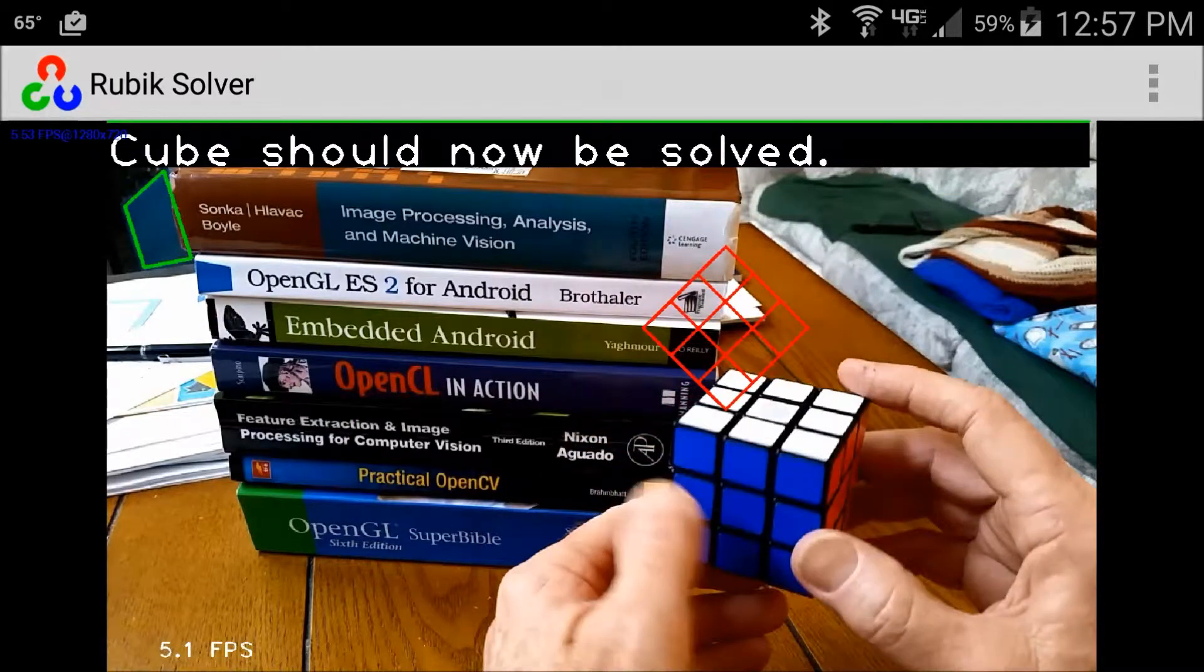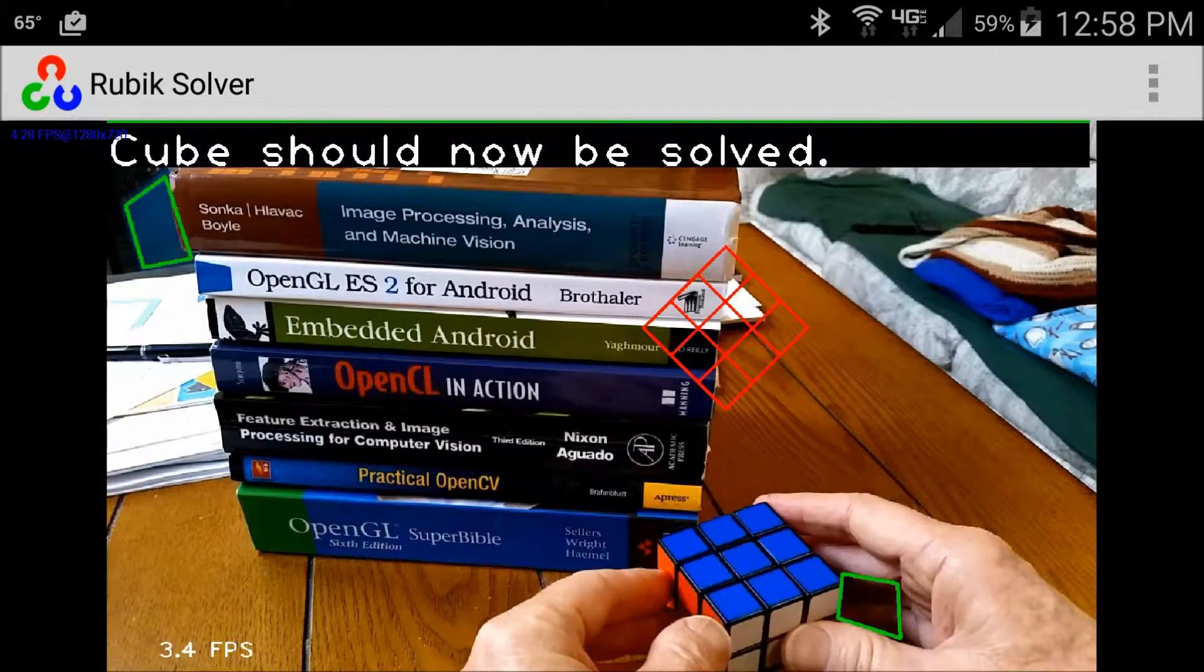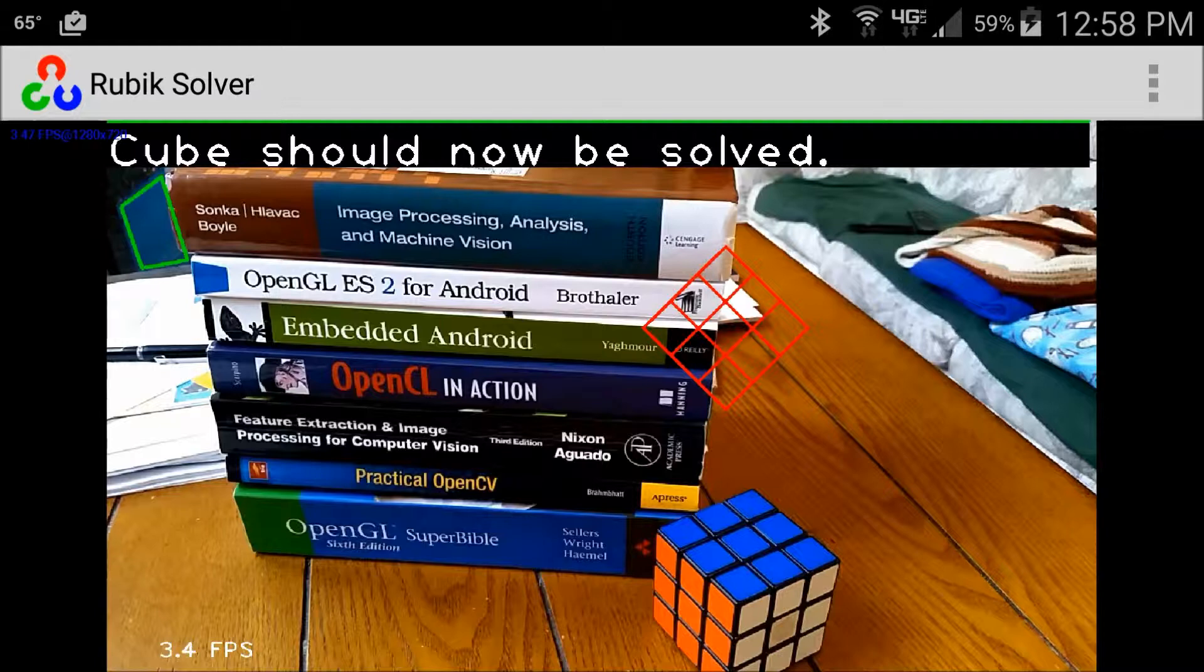From a reconstructed face, cube position, orientation, and tile colors are obtained. This information is then used to create a full 3D internal model.